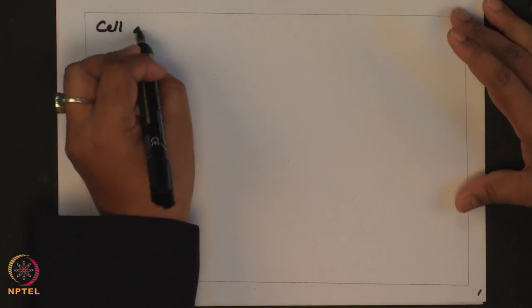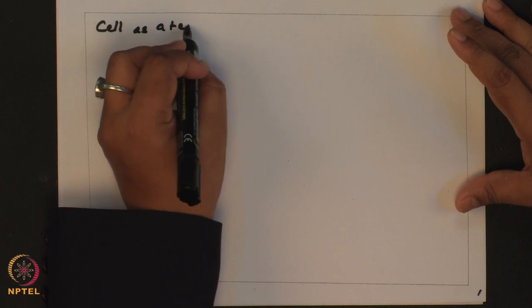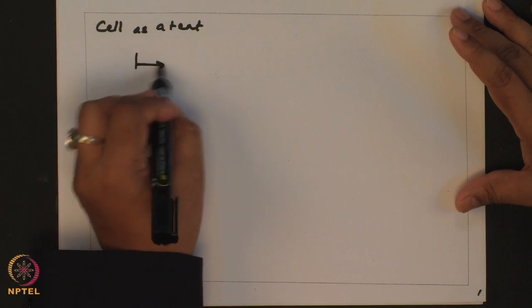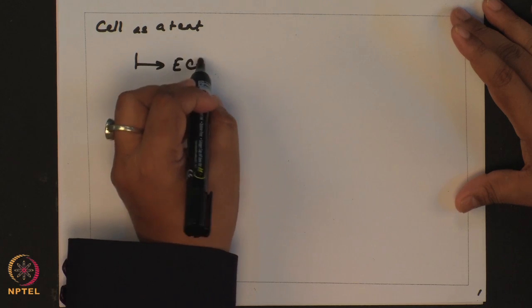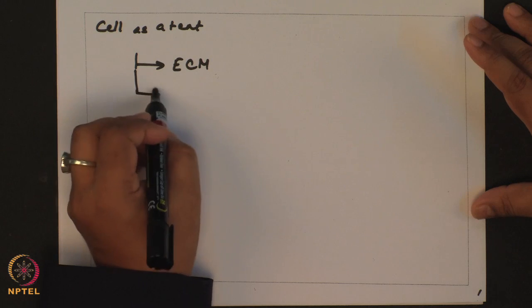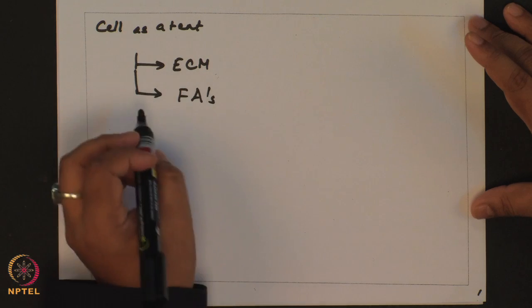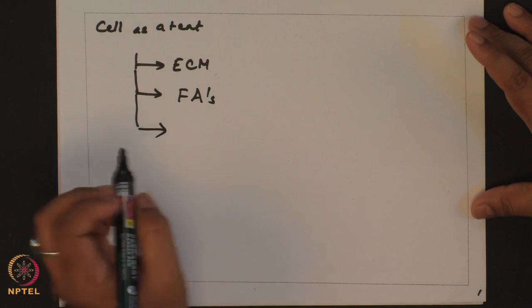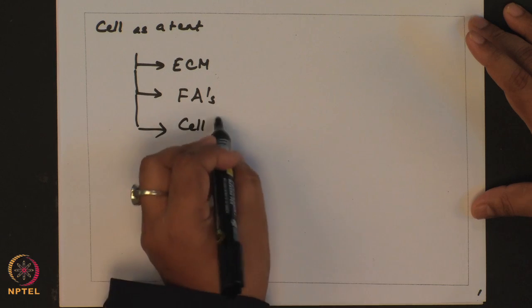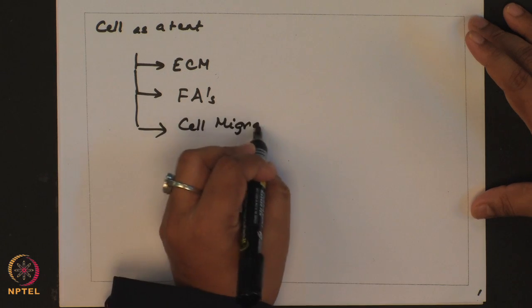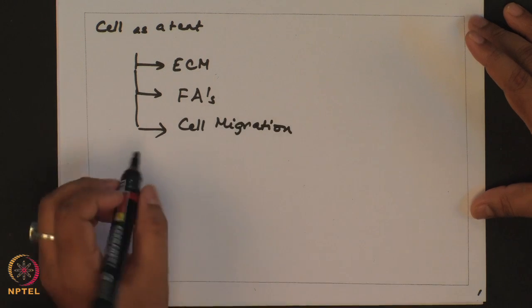Once again, just to recap what we have covered so far, we started off with our analogy of cell as a tent. From there we discussed the extracellular matrix and its properties in great detail. We went on to discuss about focal adhesions and how forces affect focal adhesions. From there we discussed cell migration and the various modes of migration that are possible.